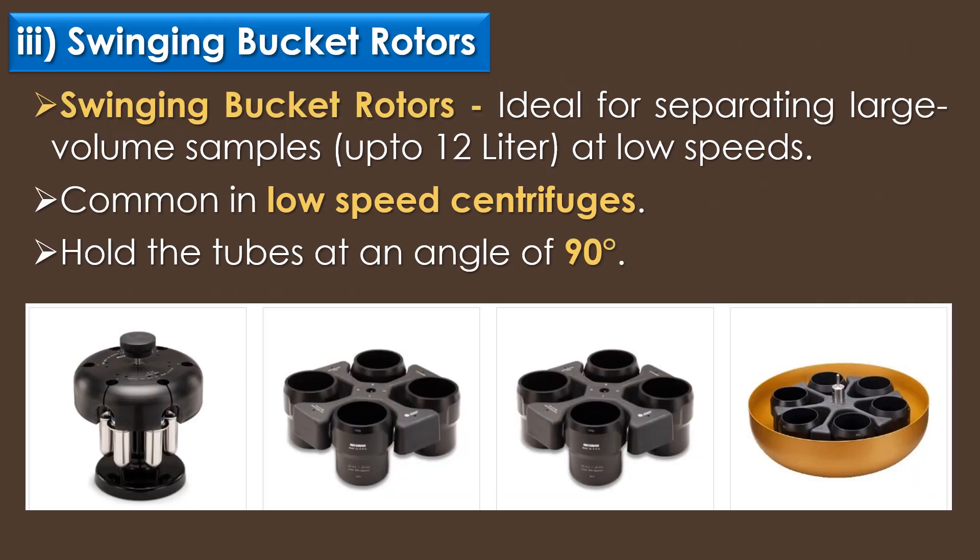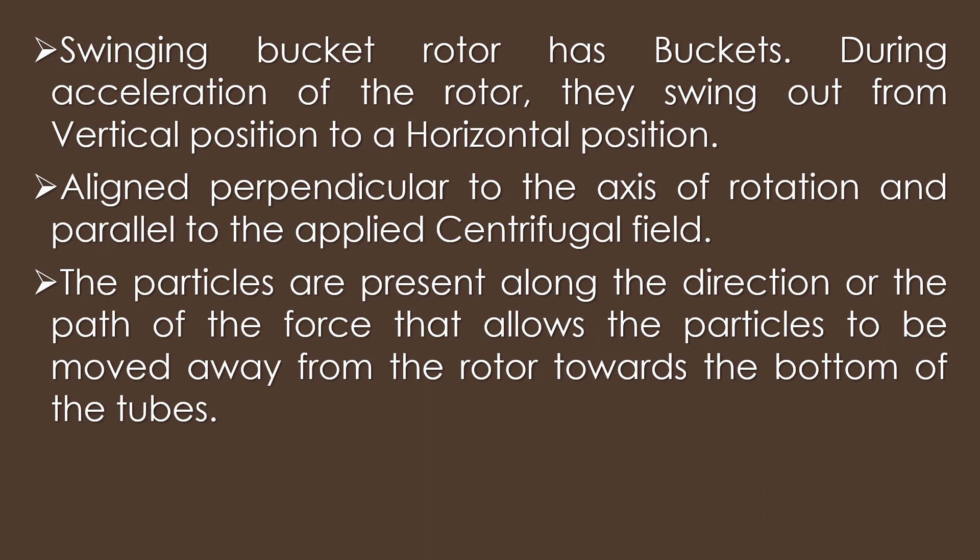The third type of rotor is swinging bucket rotors. Swinging bucket rotors are ideal for separating large volume samples up to 12 litres at low speeds, and are common in low speed centrifuges. Swinging bucket rotors hold the tubes at an angle of 90 degrees as the rotor swings when the process is started. During acceleration of the rotor, the buckets swing out from the vertical position to a horizontal position. Swinging bucket rotors are aligned perpendicular to the axis of rotation and parallel to the applied centrifugal field.